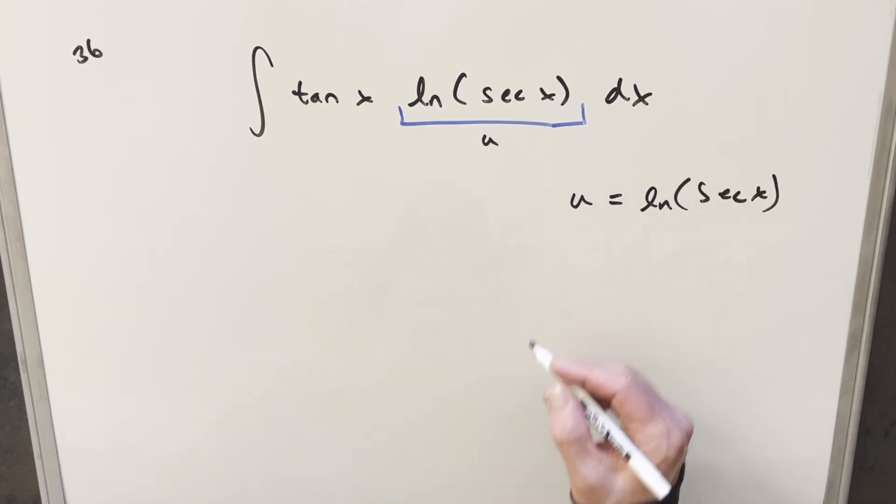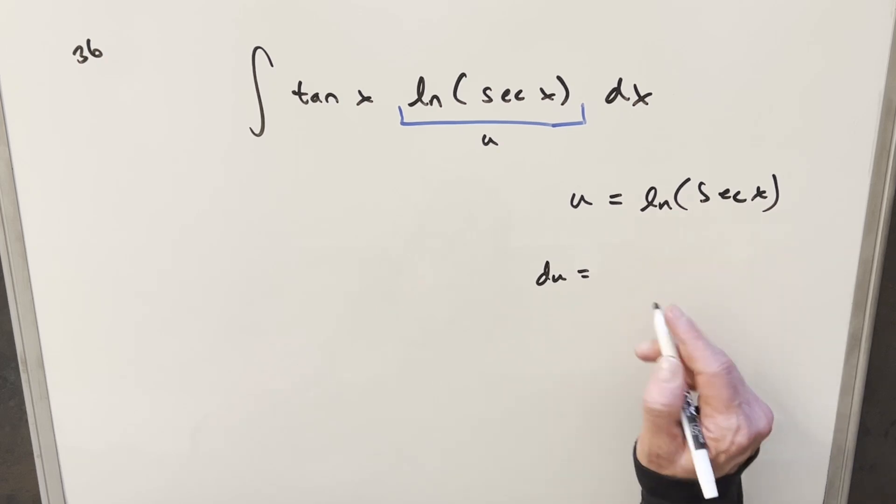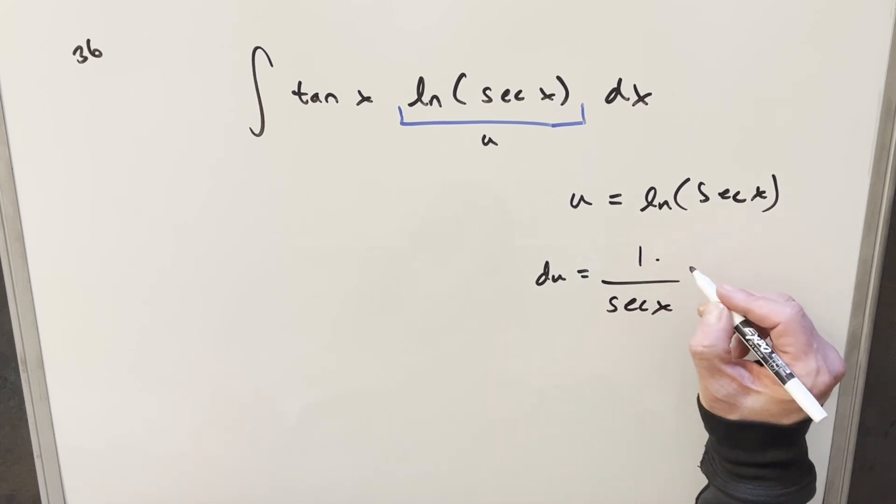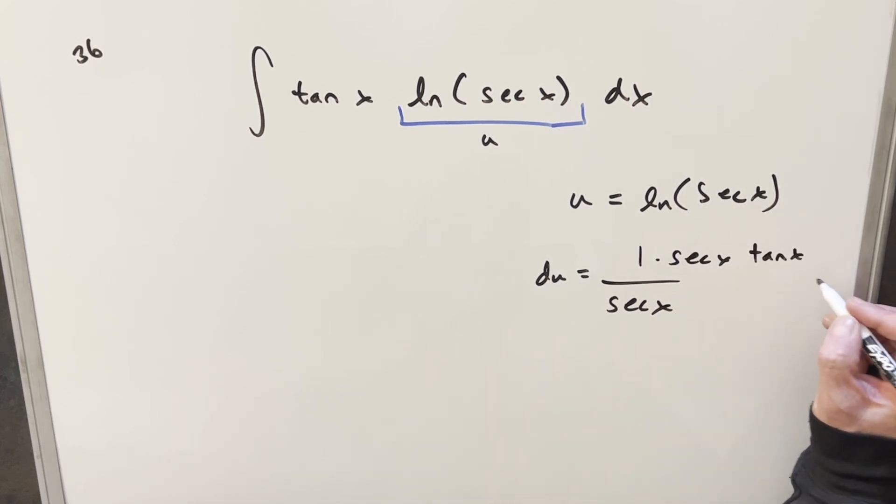So then we'll just go ahead and take a derivative here. For du, derivative of natural log of secant x is first going to give me 1 over secant x, but then I need the chain rule. Derivative of secant x is going to be secant x times tan x dx.